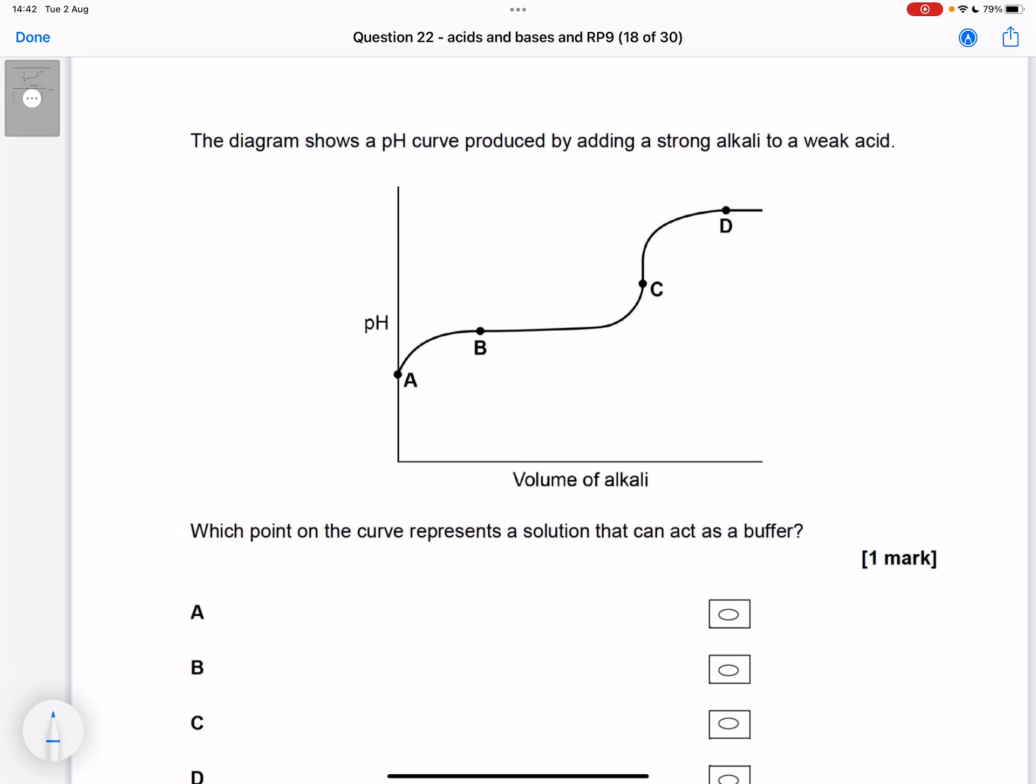So the pH is pretty constant at both B and D, the flat parts. But which one of those is a buffer?